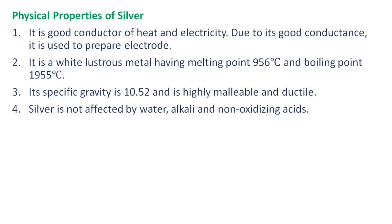Physical properties of silver: Silver is a good conductor of heat and electricity. Due to its good conductance, it is used to prepare electrodes. It is a white lustrous metal having a melting point of 956°C and a boiling point of 1955°C. Its specific gravity is 10.52, and it is highly malleable and ductile. Silver is not affected by water, alkali, and non-oxidizing acids.